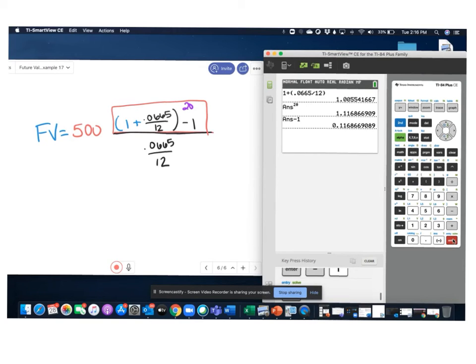Now, the next step is to take all of this top part that we just calculated and divide by this bottom part. So again, I'm going to use parentheses, and I'll divide here for that i. So I'm going to do the answer divided by 0.0665, divided by 12, and I get this value here.